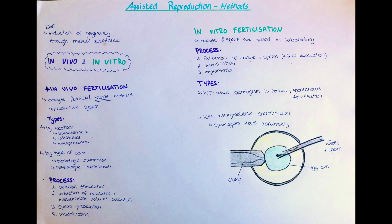Assisted reproduction is when an infertile couple seeks out medical help for induction of pregnancy through medical assistance. A couple is considered to be infertile if they have tried to conceive for one year or longer in the case they are under the age of 35, or if they have tried to conceive for half a year if they are over the age of 35.